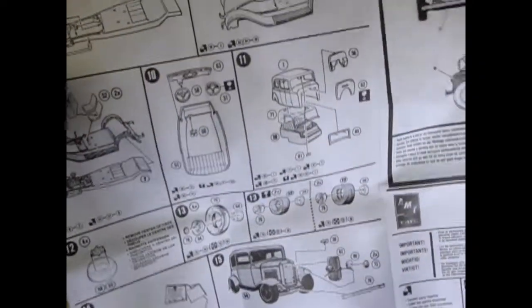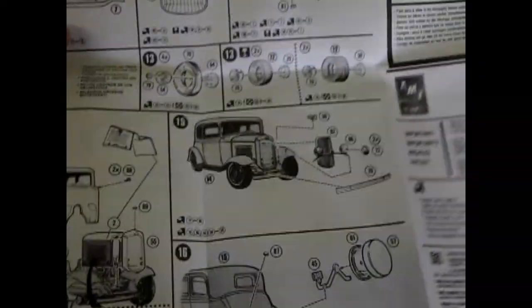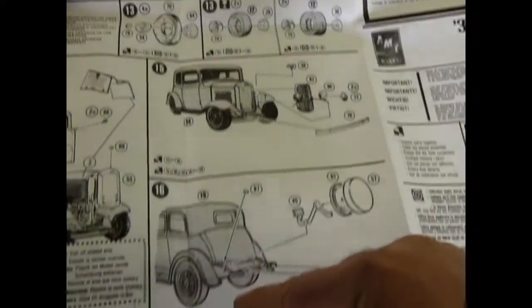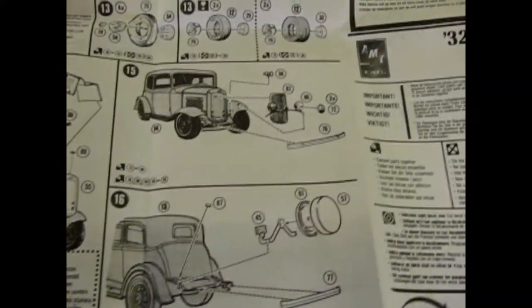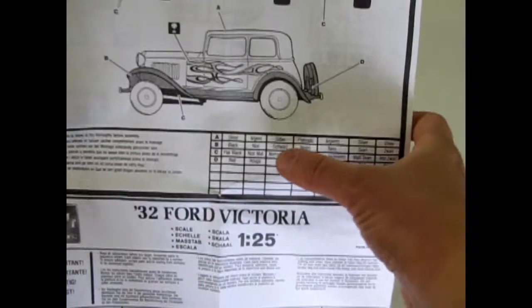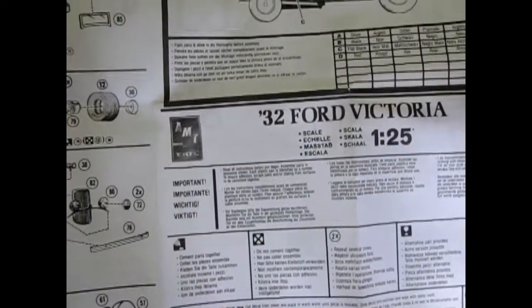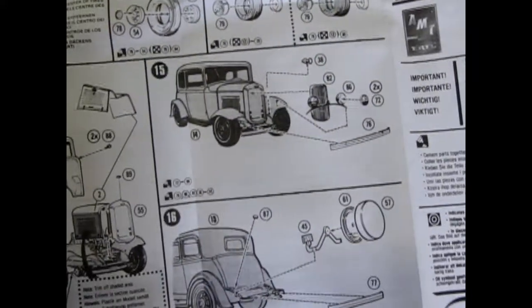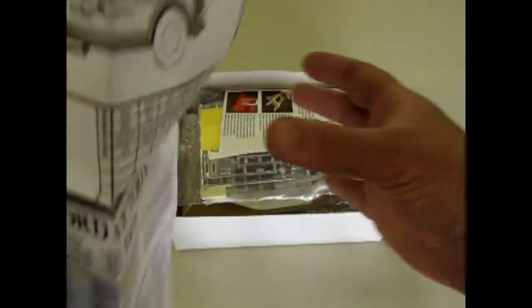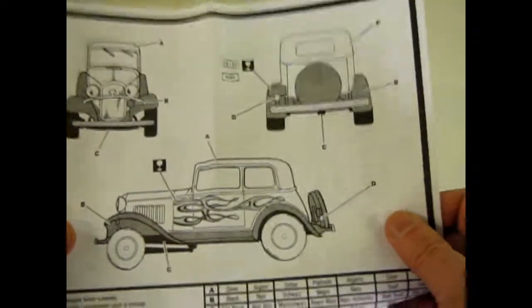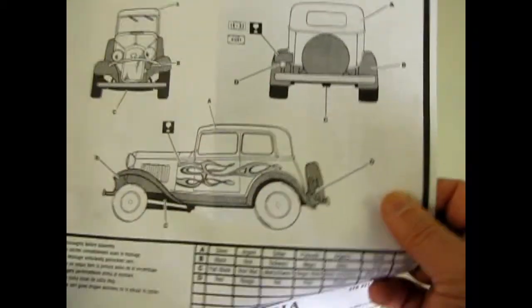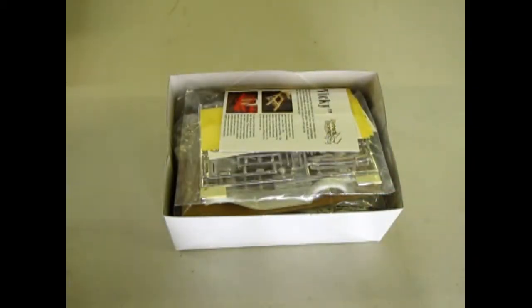But what makes it different is the Victoria body style, which is a really nice two-door type of sedan. As well, you get the color call-outs, which don't actually have the letters like in a Revell kit. But I can't deny that I really loved these flames, and we're going to look at that decal sheet right now.